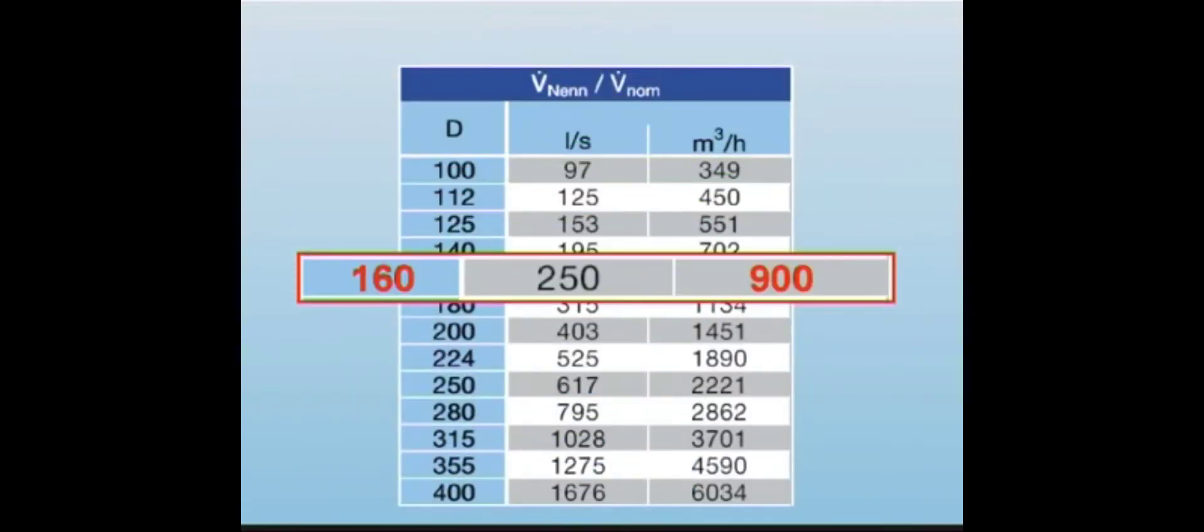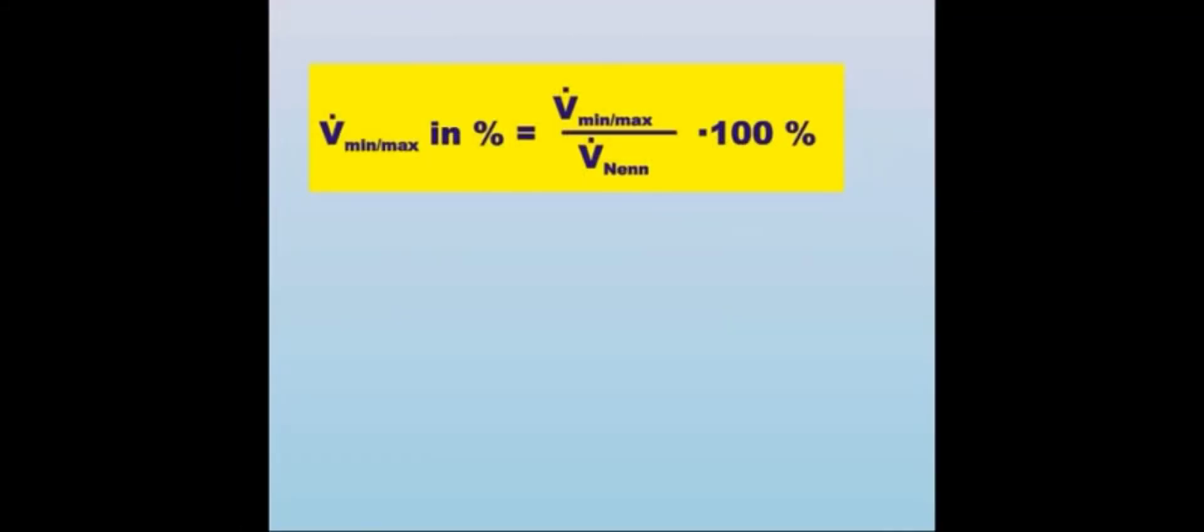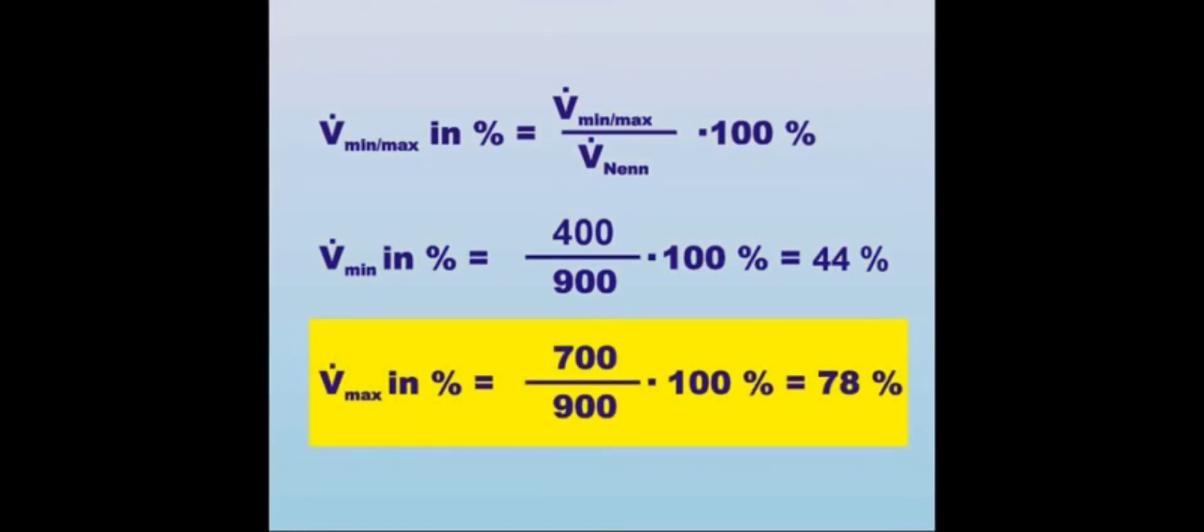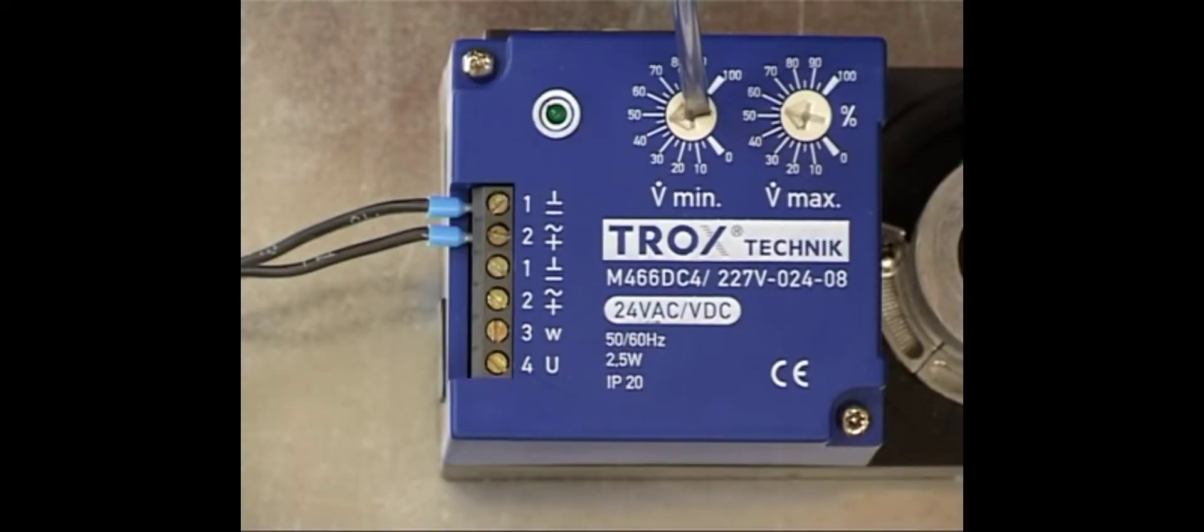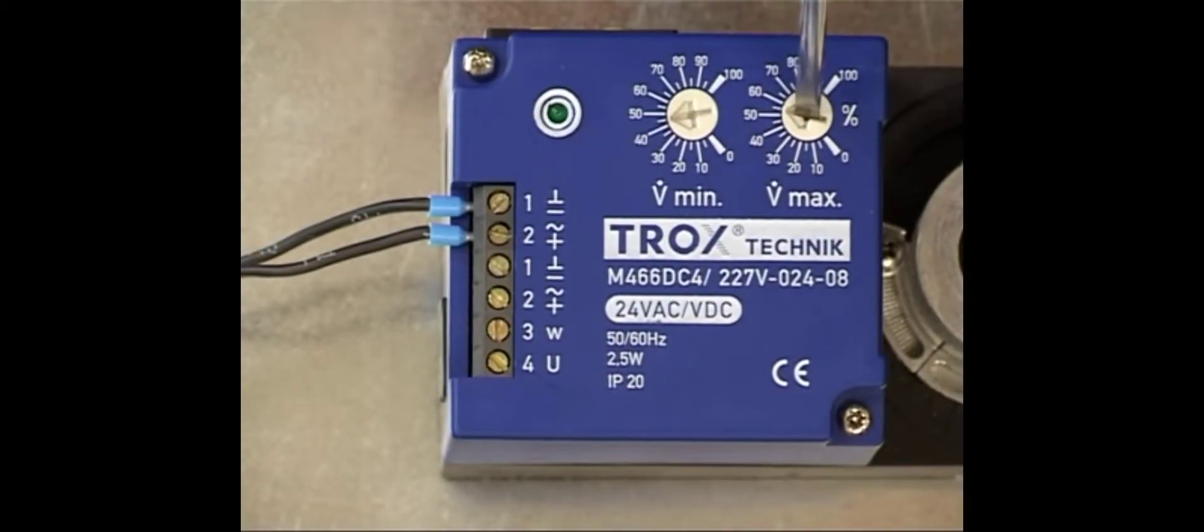The percentages for vmin and vmax can be configured using the table and the formula in the mounting instructions. Vmin and vmax values have to be adjusted on the potentiometers with a percentage value.